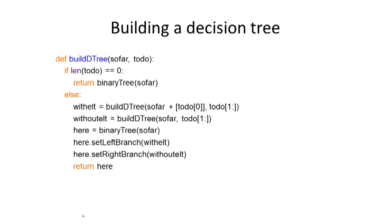So let's look at that. Here's code for building a decision tree, or a D tree as we're going to call it. We've got two arguments, sofar and todo. Think of those as lists of elements. Sofar will be the list of things that I've already decided to include in the knapsack when I got to this node. Todo will be the list of things I still have to consider. It's the format you'd expect, a recursive kind of process.